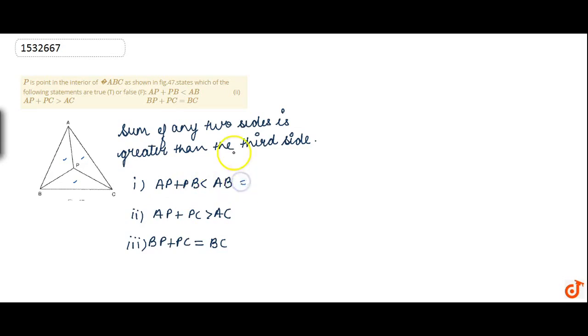Our statement says that the sum of any two sides is always greater than the third, but here it is less than sign. So this is false, according to our statement, which is the sum of any two sides is greater than the third side.